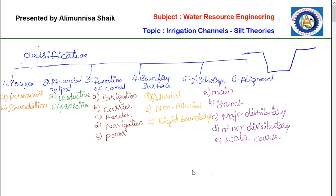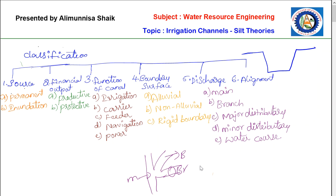Branch canals are connections branched off from the main canal. The main canal supplies water and creates branches — these are called branch canals, which are not the main source but branch sources. Branch canals usually serve as feeder canals for major and minor distributories, and the discharge will be over 5 cumecs.